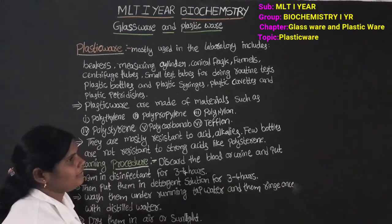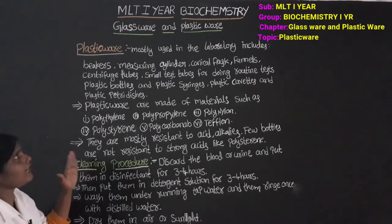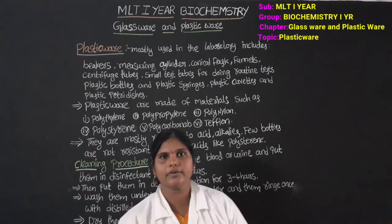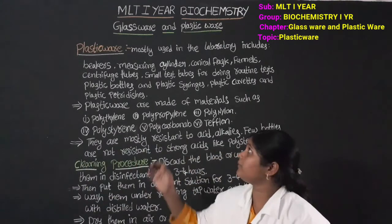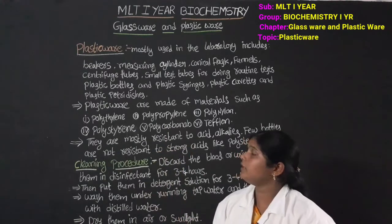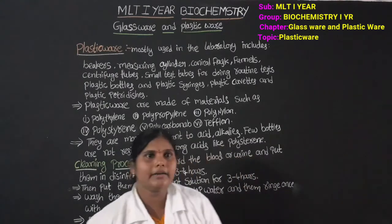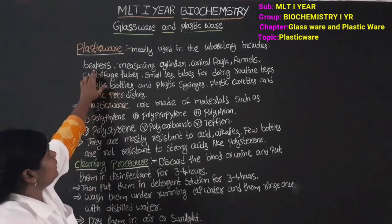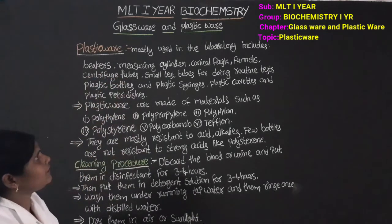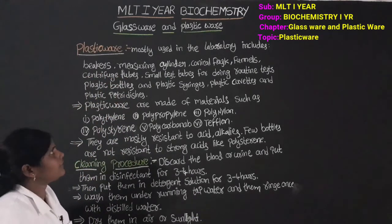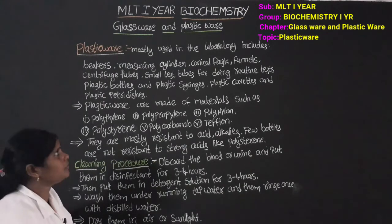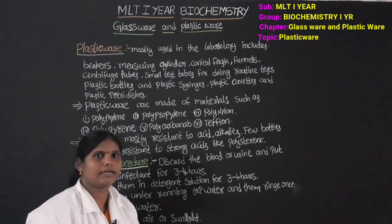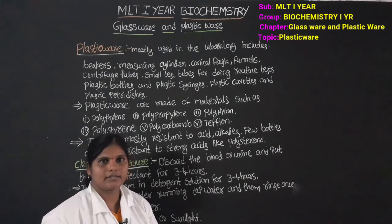This once more covers plasticware. In the glassware and plasticware lesson, we discussed glassware earlier; now let's discuss plasticware. Plasticware includes: beakers, measuring cylinders, conical flasks, funnels, centrifuge tubes, small test tubes, petri dishes, plastic syringes, plastic cuvettes, and plastic bottles.